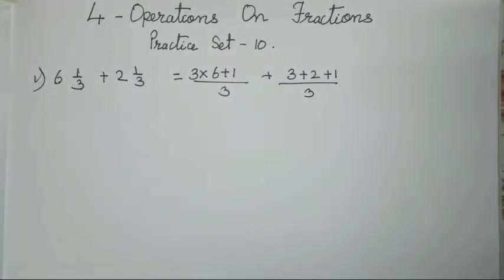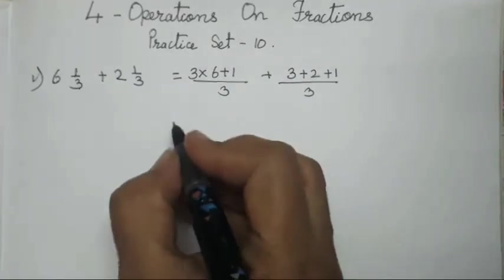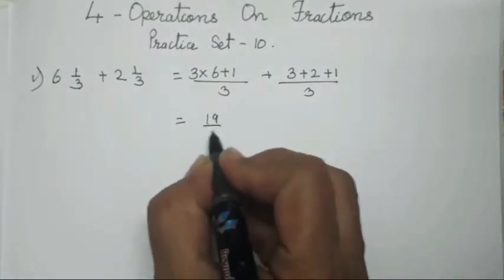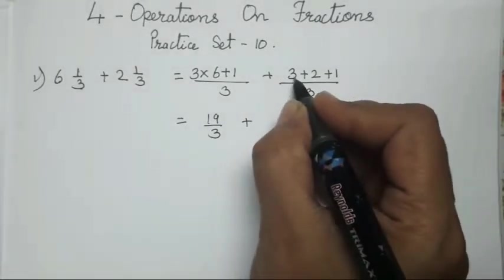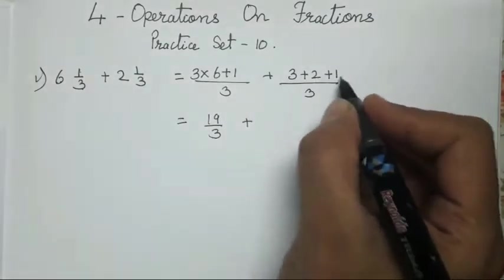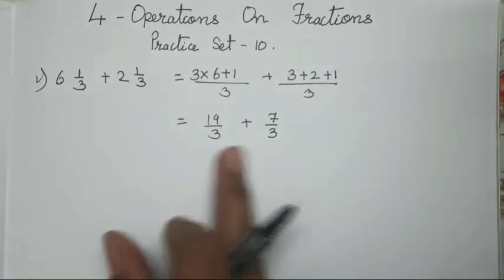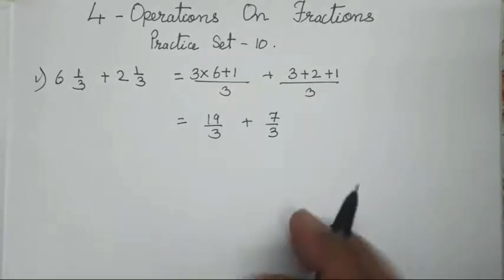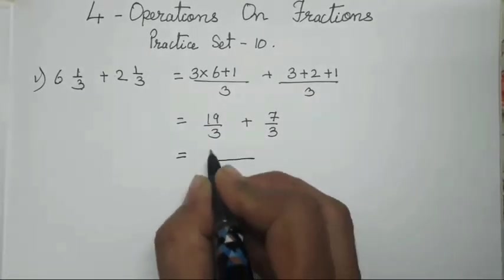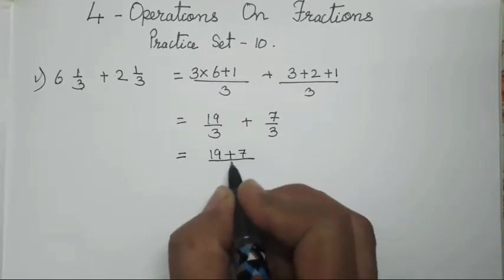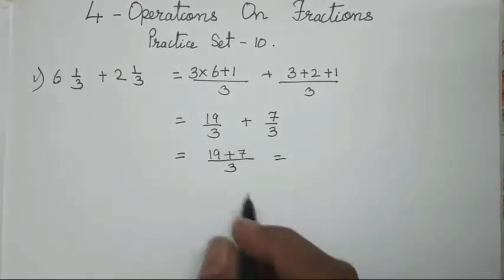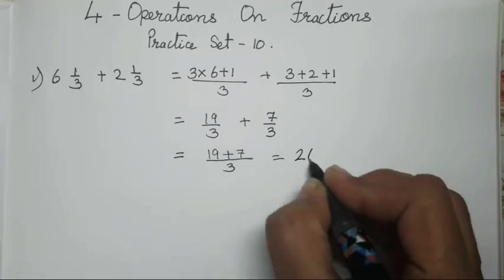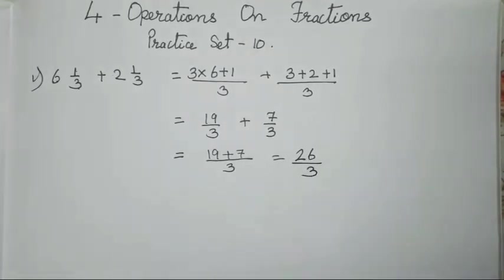You all have to do the same step twice. So this is going to be: 3 threes are 9, 18 plus 1 — 19 upon 3. And 3 twos are 6 plus 1 — 7 upon 3. Now both the denominators are the same, because the denominator already was the same. Now what you all have to do is add the numerators: 19 plus 7 gives us 26. So 26 upon 3 is your answer.